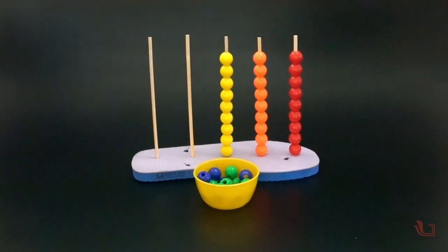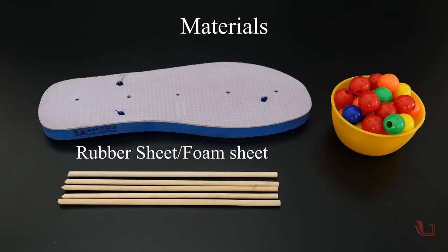To make a simple abacus, we need the base of a rubber flip flop or any foam rubber sheet, wooden sticks and colorful beads.